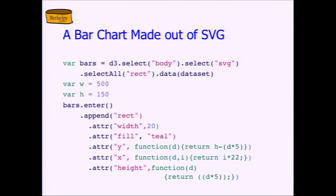With divs, we got the horizontal ordering for free because HTML was laying out a document for us sequentially. With SVG, you're actually saying where this rectangle is on a canvas — say 500 by 100 — so you have to say that its X position is a function of I, the second possible argument to a D3 function which is its index in the data. The zeroth element will be on the far left at zero, the first at 22, the second at 44, and so on. Note that the width of these rectangles is 20, so 20 out of that 22 is bar and two is space.